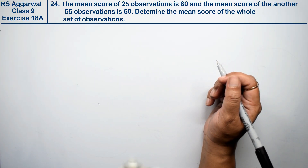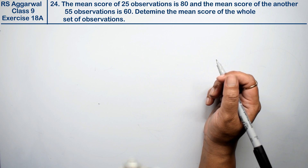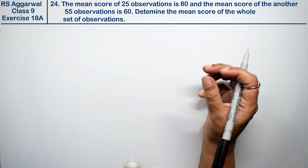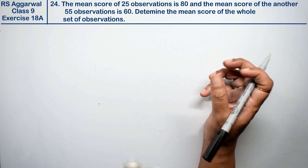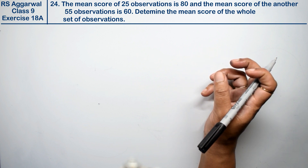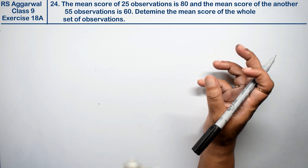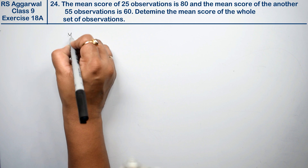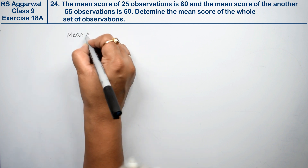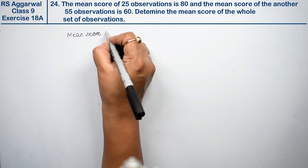Let's do question number 24 of Exercise 18a — that is mean, median and mode of ungrouped data. The mean score of 25 observations is 80, and the mean score of another 55 observations is 60. Determine the mean score of the whole set of observations.